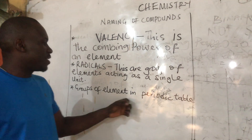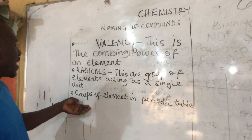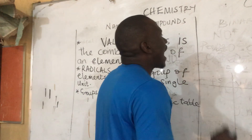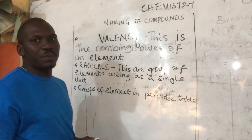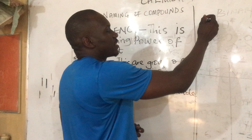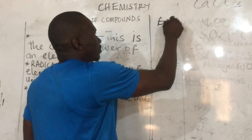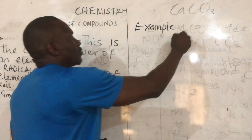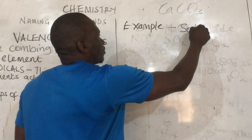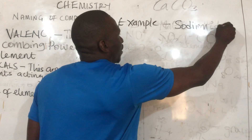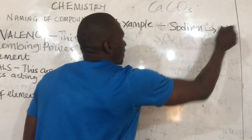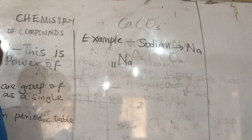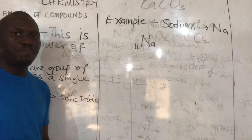Number three: groups of elements in the periodic table. This group works with the valency. How do we know the groups of elements in the periodic table? Example: using sodium. Sodium, with symbol Na, has 11 protons, which means sodium is number 11 in the periodic table.